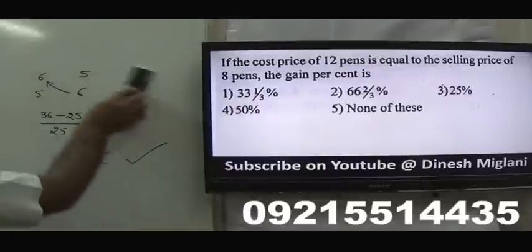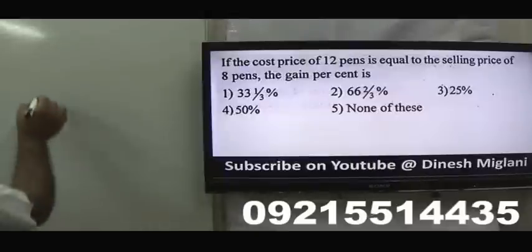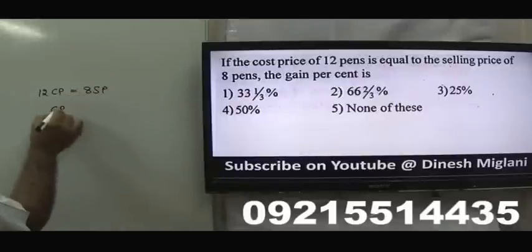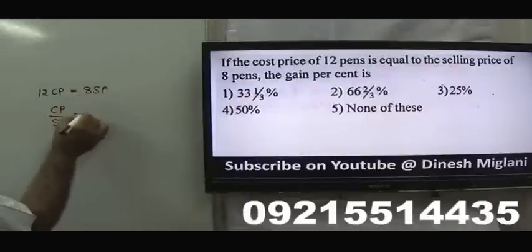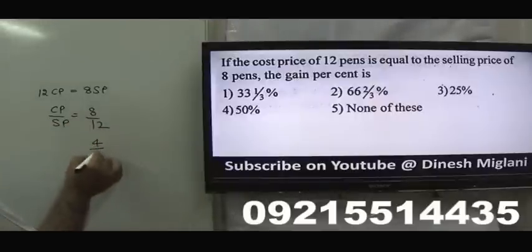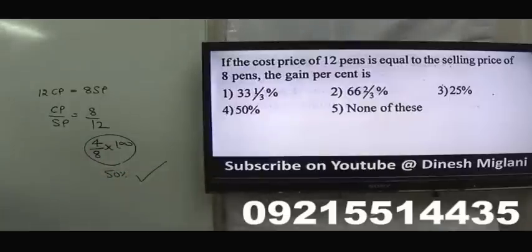Cost price of 12 pens equals selling price of 8 pens. So 12 CP = 8 SP, meaning CP/SP = 8/12. So selling price = 12 and cost = 8, profit = 4. Profit percent = 4/8 × 100 = 50%. Answer: 50% profit.